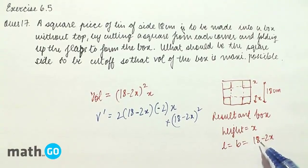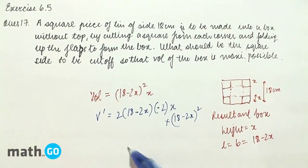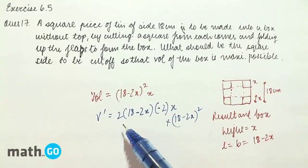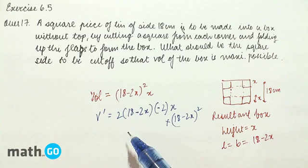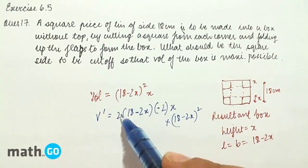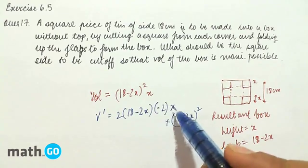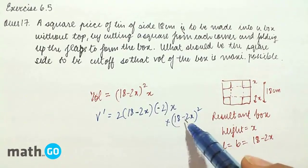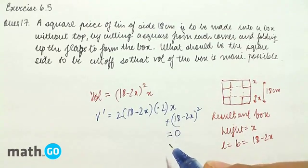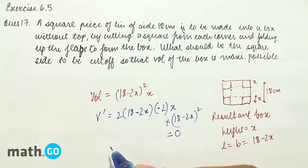Volume will be LBH. So, now we differentiate it for finding the maximum possible volume. Differentiate: it will be 2(18-2x)(-2)x plus (18-2x)². Now this has to be kept equal to 0.